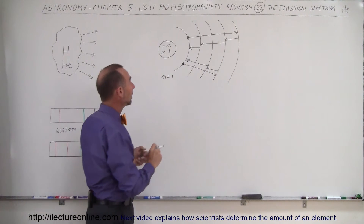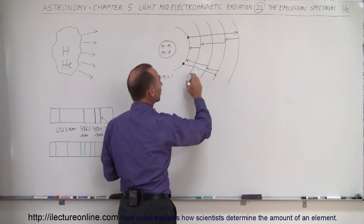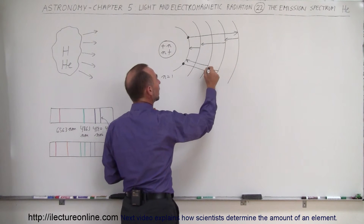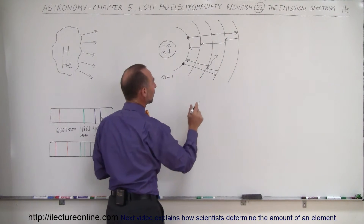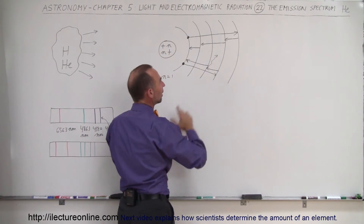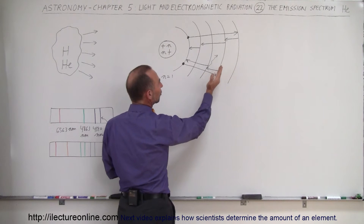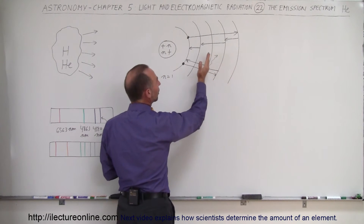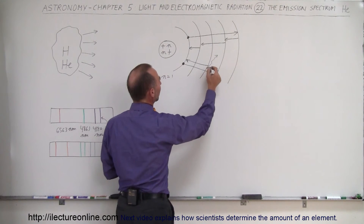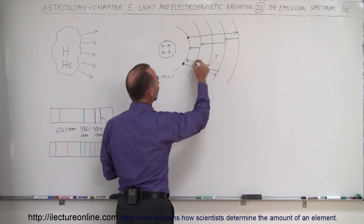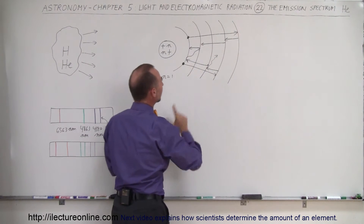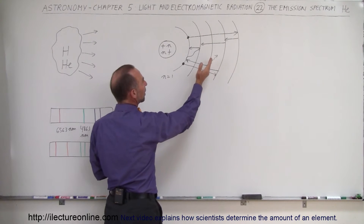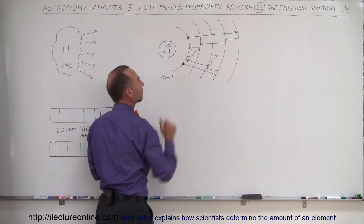Each time that an electron jumps to a lower level, it will give off a photon of the energy difference between the two levels that it was at — that is, the difference between the energy of the level where it came from and the level where it ended up. So if it jumps from this level to this level, it gives off a photon of the exact energy equal to the difference between those two levels.